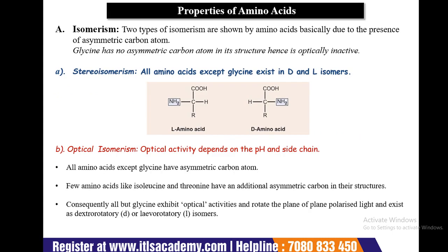Regarding properties of amino acids, the first property is isomerism. There are two types of isomerism shown by amino acids due to the presence of an asymmetric carbon atom. Glycine has no asymmetric carbon atom in its structure and is therefore optically inactive. Stereoisomerism: all amino acids except glycine exist in D and L isomers. In D-amino acids the NH2 group is on the right, while in L-amino acids it is oriented to the left — the same orientation as the hydroxyl group of the central carbon of glycerol.